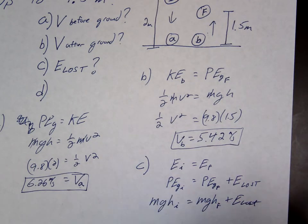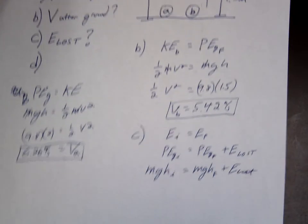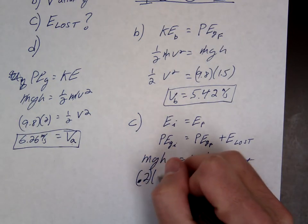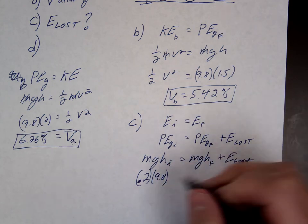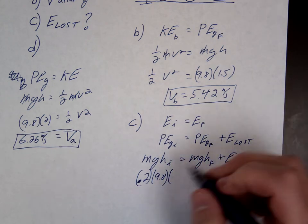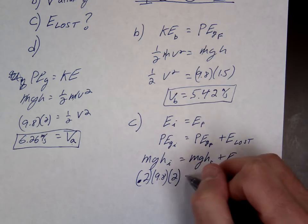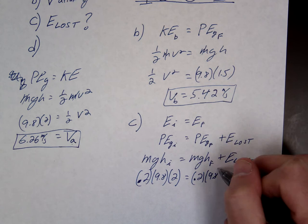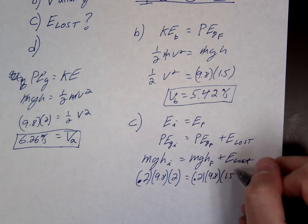Okay, so 200 grams, what do we have to do with 200 grams? Convert that, yeah. So that's going to be 0.2 times 9.8 times, what was it, 2? And 0.2 times 9.8 times 1.5.